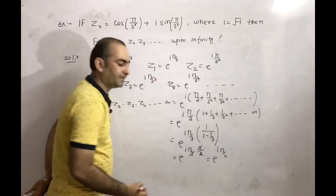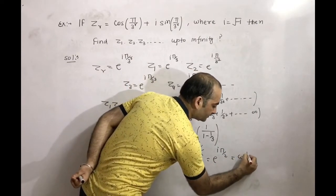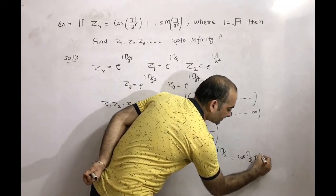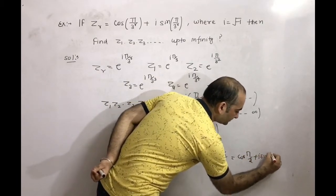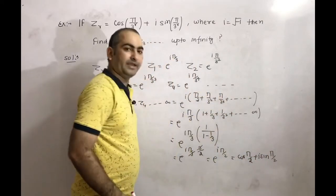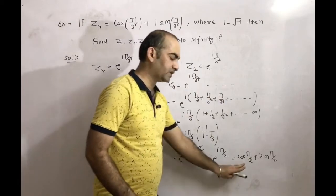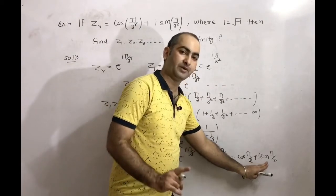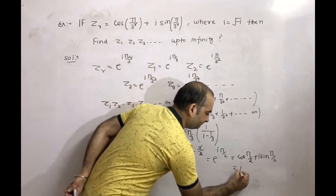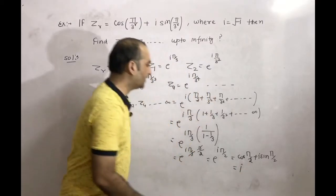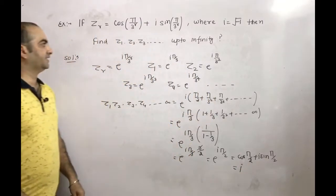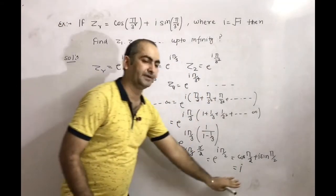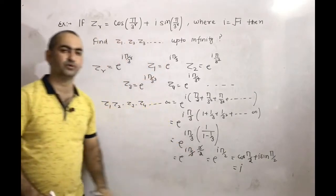Now converting: e^(iπ/2) = cos(π/2) + i·sin(π/2). Here cos(π/2) = 0 and sin(π/2) = 1, so this equals i. Therefore, z₁·z₂·z₃·... to infinity equals i. This is the final answer.